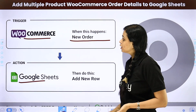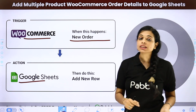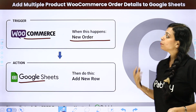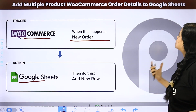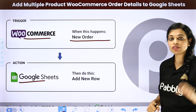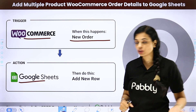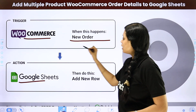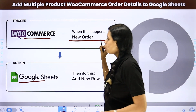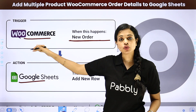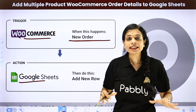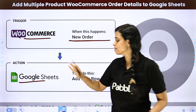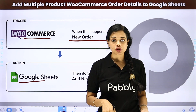Next, we have adding multiple product WooCommerce order details to Google Sheet. Every time there is a new order in WooCommerce, those order details are automatically added to your Google Sheet.